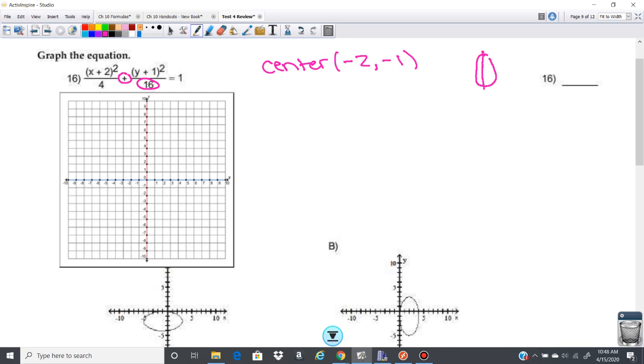It's going to have a long vertical major axis here. That's going to be my a squared equals 16, which makes my a plus or minus 4. And then my b squared is going to be 4, and that's going to make my b plus or minus 2.